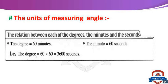The units of measuring angle are: degree, minute, and second. One degree equals 60 minutes. One minute equals 60 seconds. Therefore, one degree equals 60 times 60, which equals 3600 seconds.